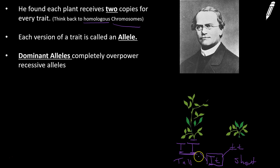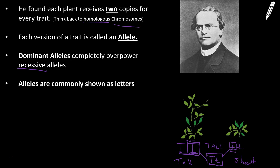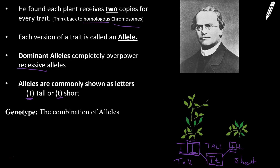Dominant alleles completely overpower recessive ones. This would be a dominant allele and this would be a recessive allele, because if both were inherited I wouldn't see a short or medium-sized plant — I would still see a tall plant. So one allele had to be dominant over the other; the one that's not dominant we call recessive. On paper, alleles are commonly shown as letters using the letter of the dominant trait. Since we're working with height, the dominant trait is tall, so we use a capital T for dominant and a lowercase t for recessive.